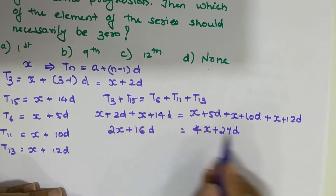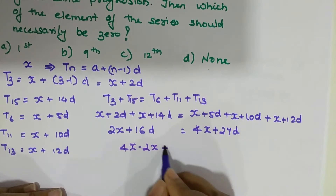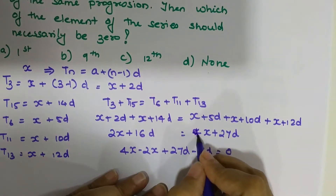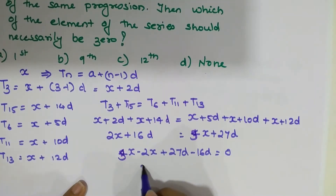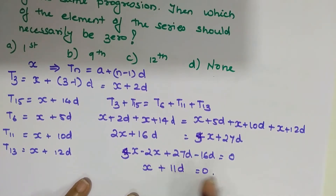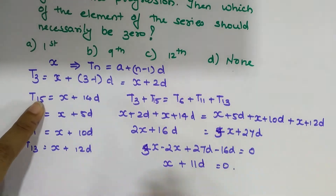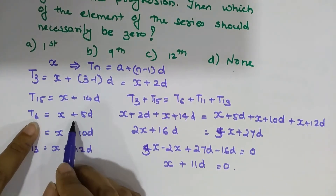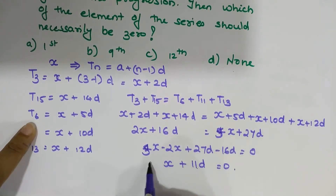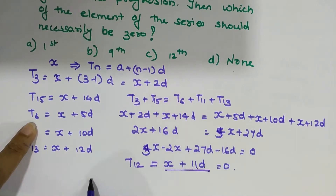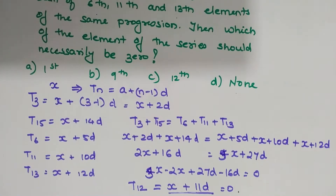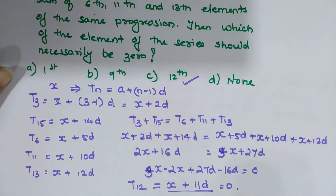Shifting all terms to one side: 3x − 2x + 27d − 16d = 0, giving us x + 11d = 0. Now, for the nth term the formula is a + (n−1)d, so the coefficient of d is one less than the term number. Since we have 11d, the term must be T12, because only then x + 11d satisfies a + (12−1)d. Therefore the 12th term equals zero.